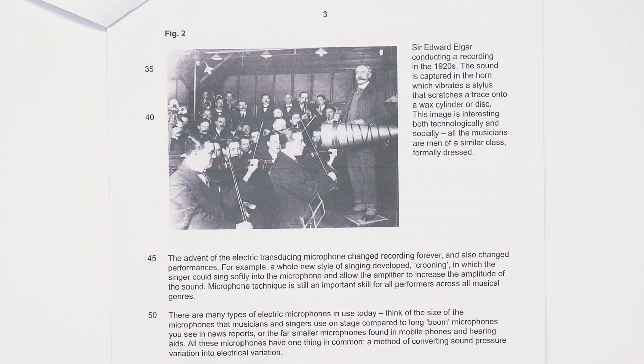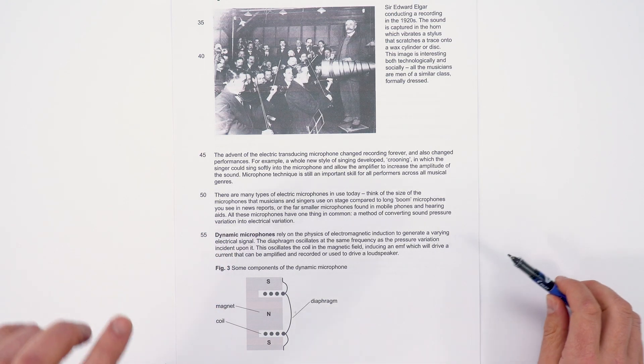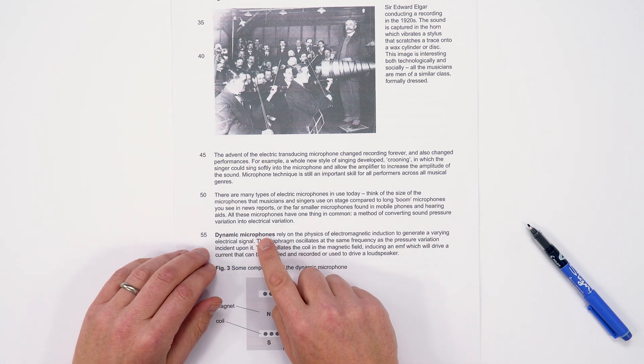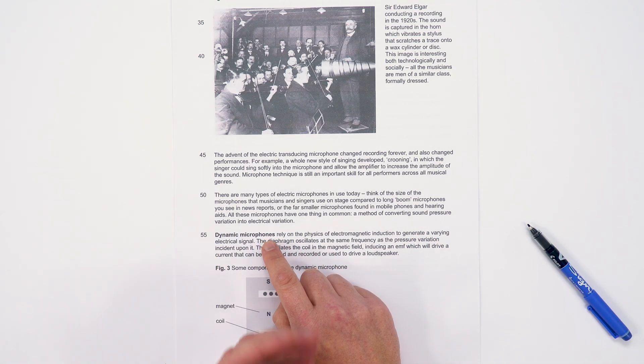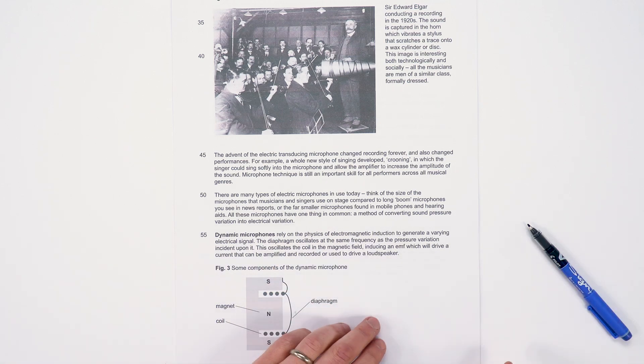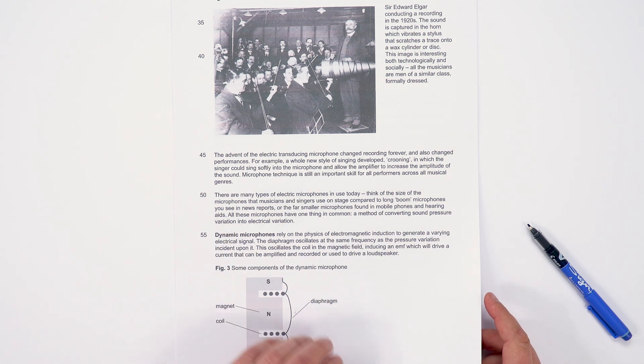Dynamic microphones are the standard type of microphone that you'll have maybe learned about at GCSE and even A-level so far. This is very much just thinking about how if you move something in a magnetic field, we're going to get an EMF and therefore you might have a current in a wire.